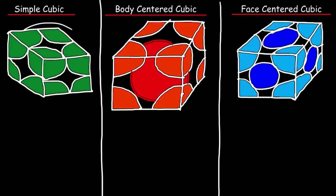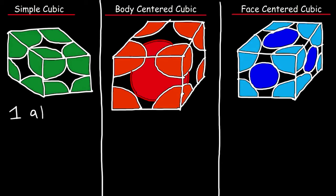Each of these cubes represents a single unit cell. For the simple cubic structure, within one unit cell there's only one atom. For the body centered structure you have two atoms per unit cell, and for the face centered cubic structure there are four atoms per unit cell.